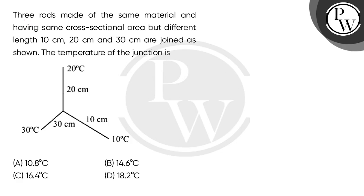Hello children, let's read the question. Three rods made of the same material and having the same cross-sectional area but different lengths — 10 cm, 20 cm, and 30 cm — are joined as shown. The temperature of the junction is?